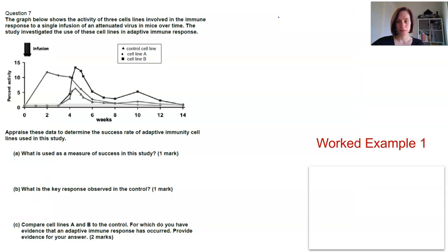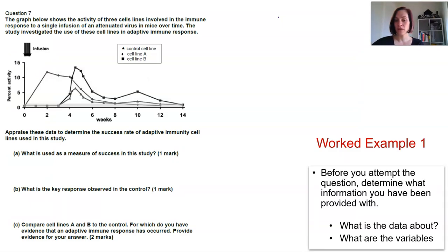Now here's a worked example, and again, before you attempt the question, determine what information you've been provided with. What is the data even about and what are the variables you're looking at? So when we're talking variables, that's that idea of success. What is the measure of success? So here it looks like we've got time versus percent activity.